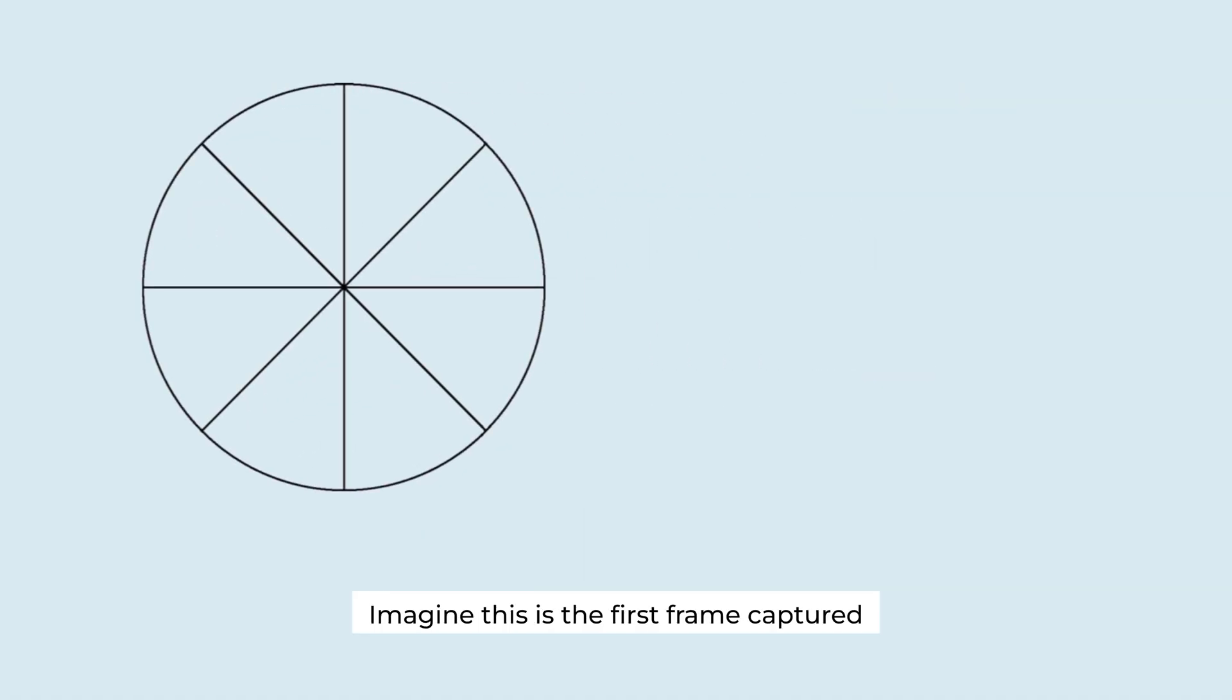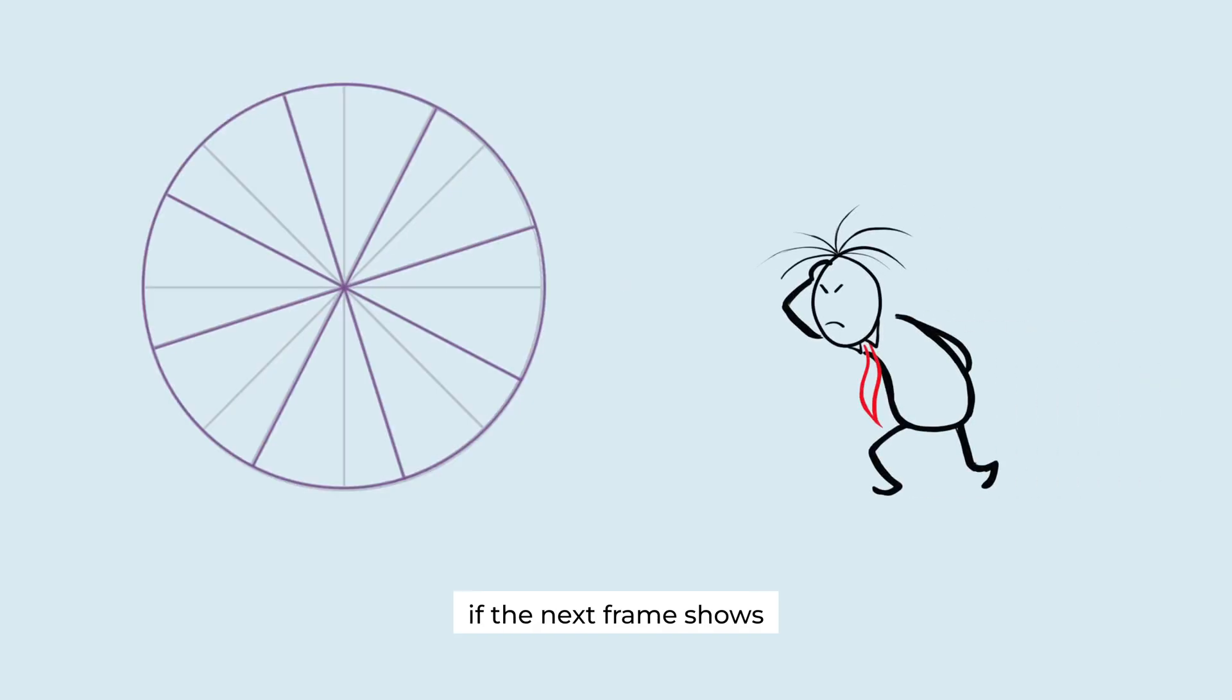Imagine this is the first frame captured. Now, what happens if the next frame shows the spokes rotated slightly forward? The shortest angular distance is this. So our brain interprets the movement as going forward.